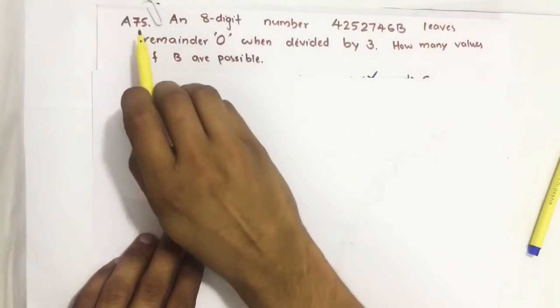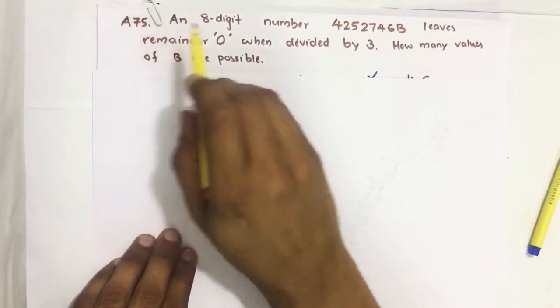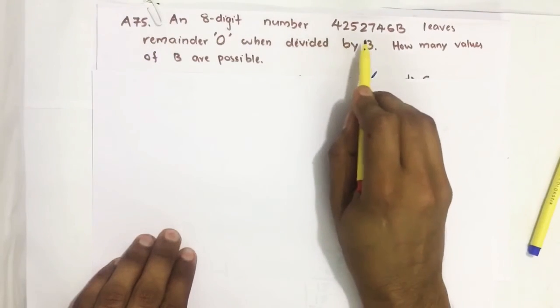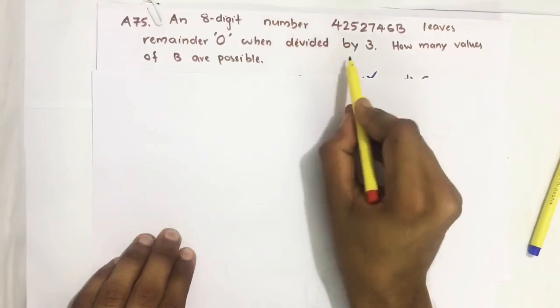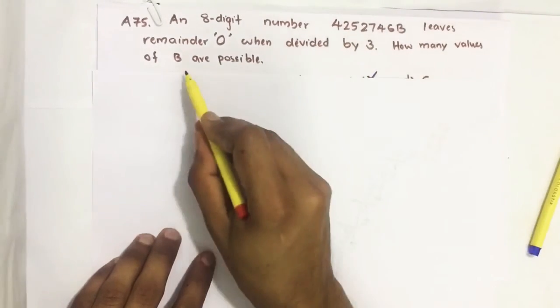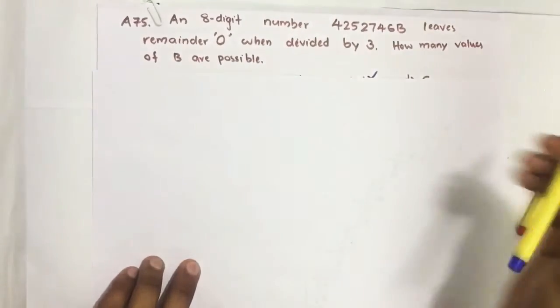Hello everyone, here I'm going to solve 2019 CSAT question number 75 from question paper series A. An 8-digit number 4252746B leaves remainder 0 when divided by 3. How many values of B are possible?